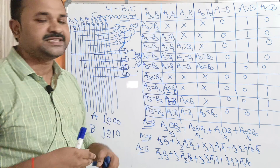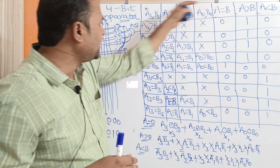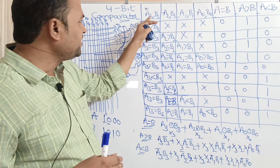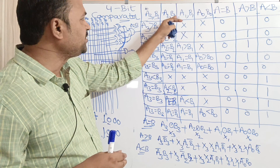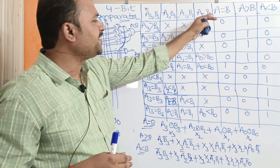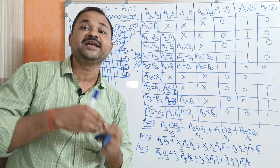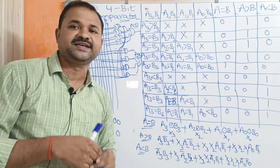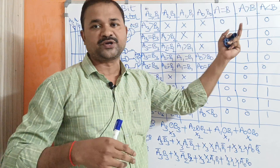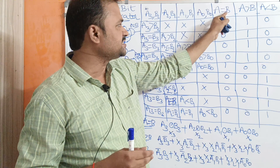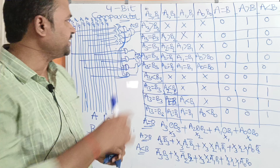Now let us see the truth table. The inputs are: A3 compared with B3, A2 with B2, A1 with B1, and A0 with B0 — so there are four input columns. The three output columns are: A equal to B, A greater than B, and A less than B.